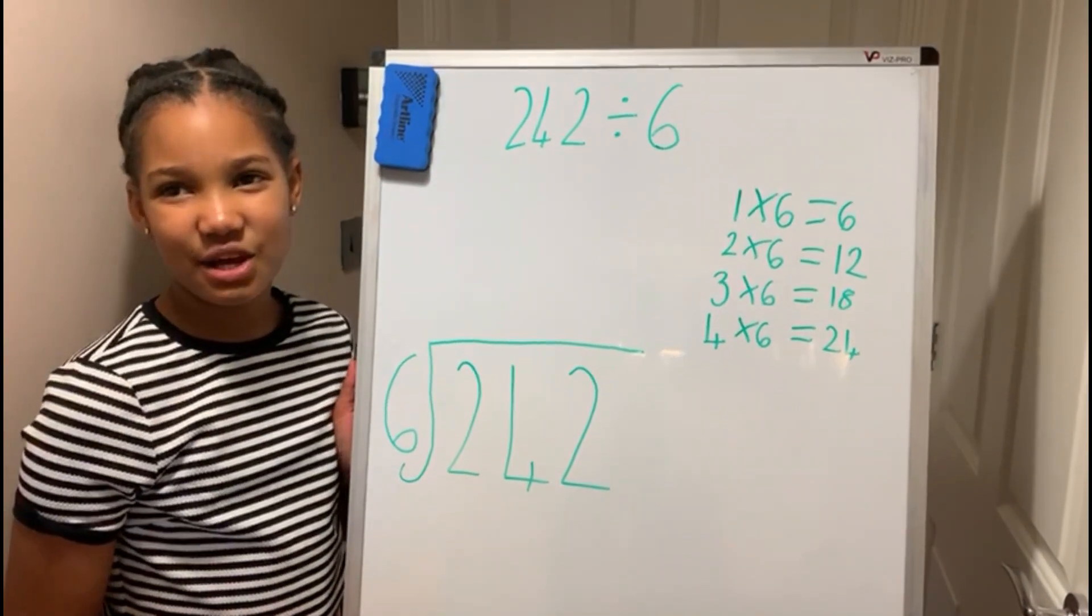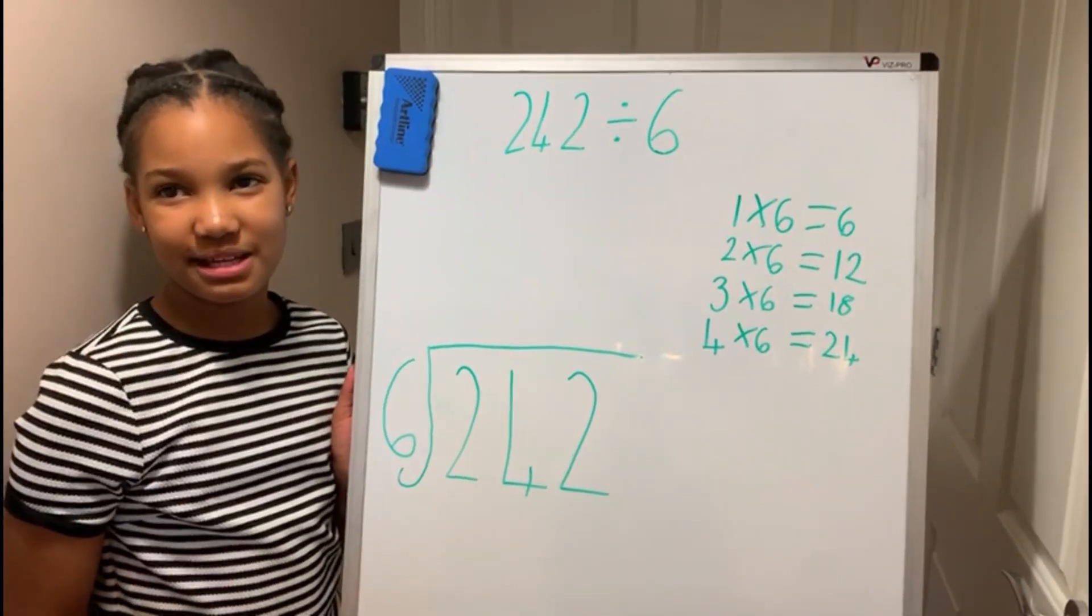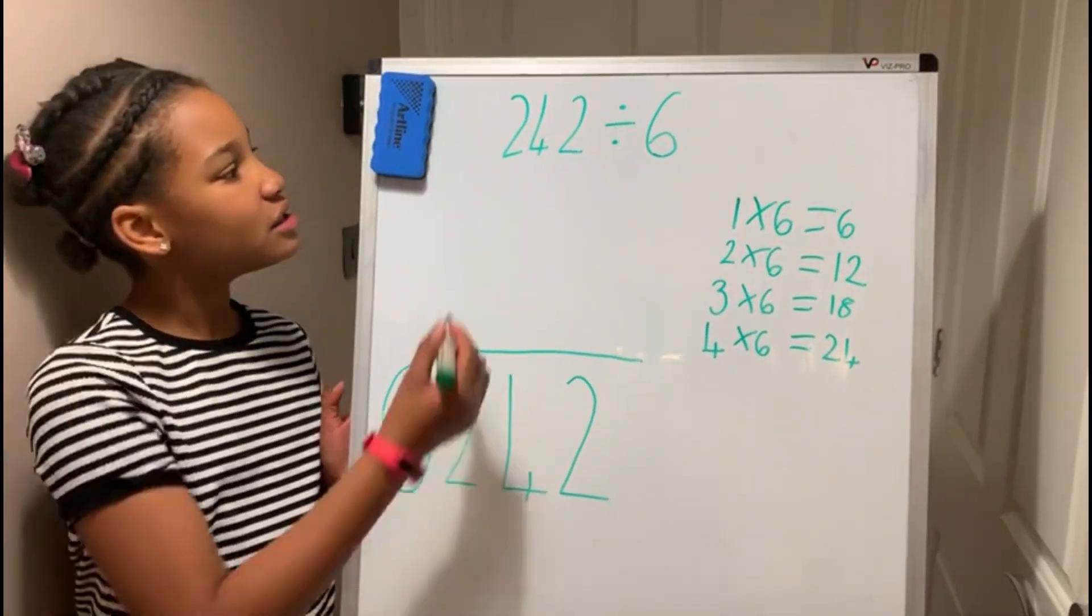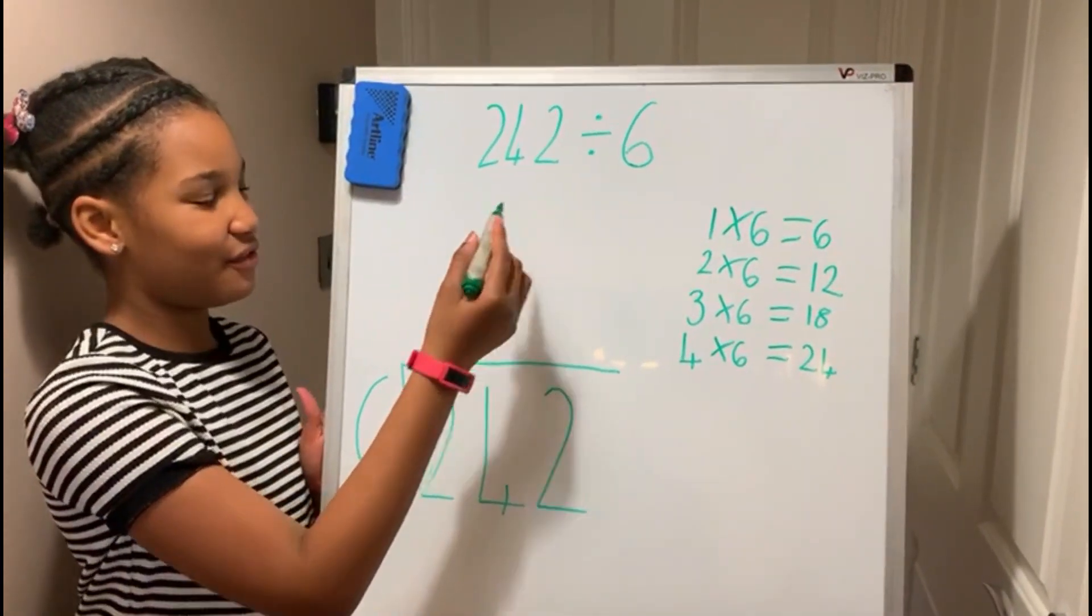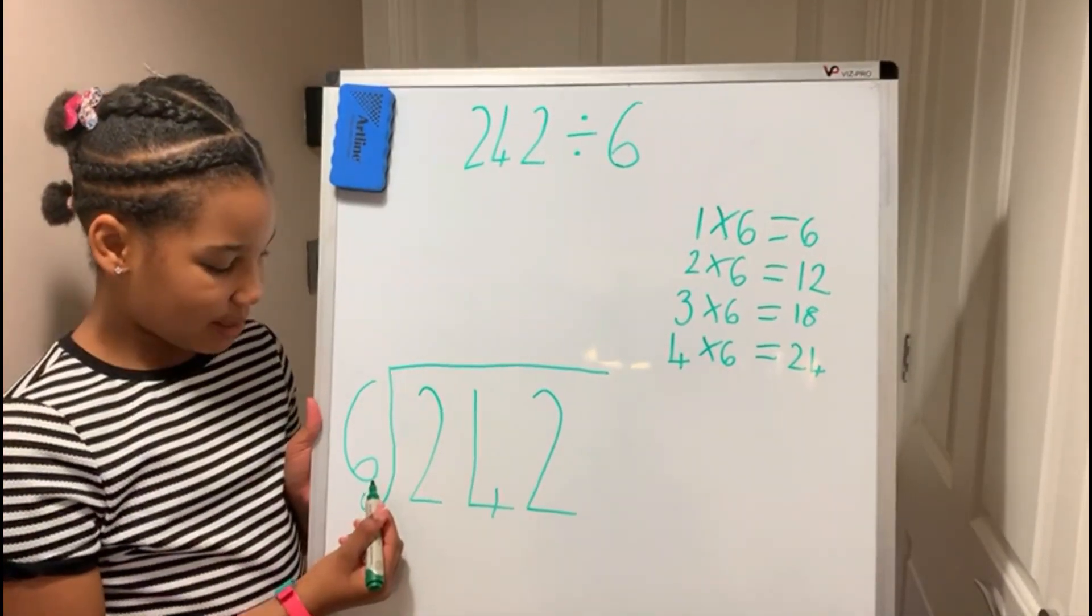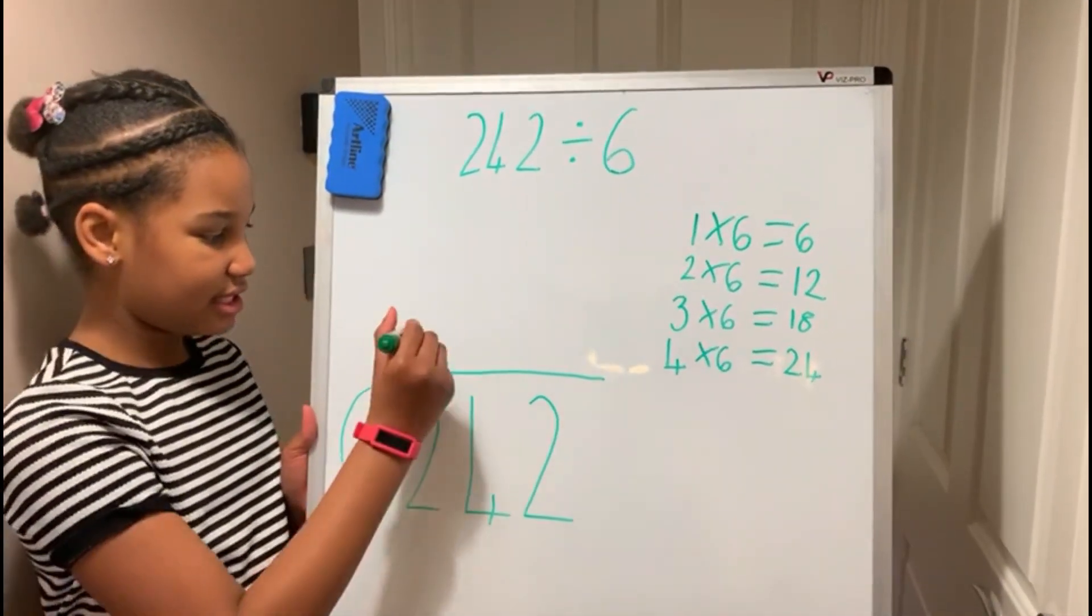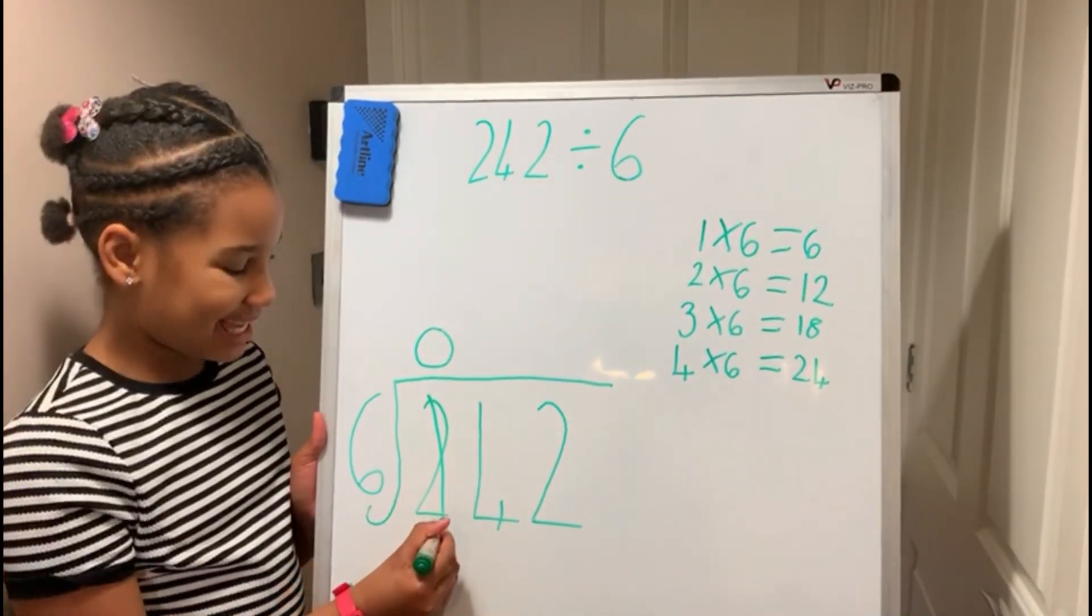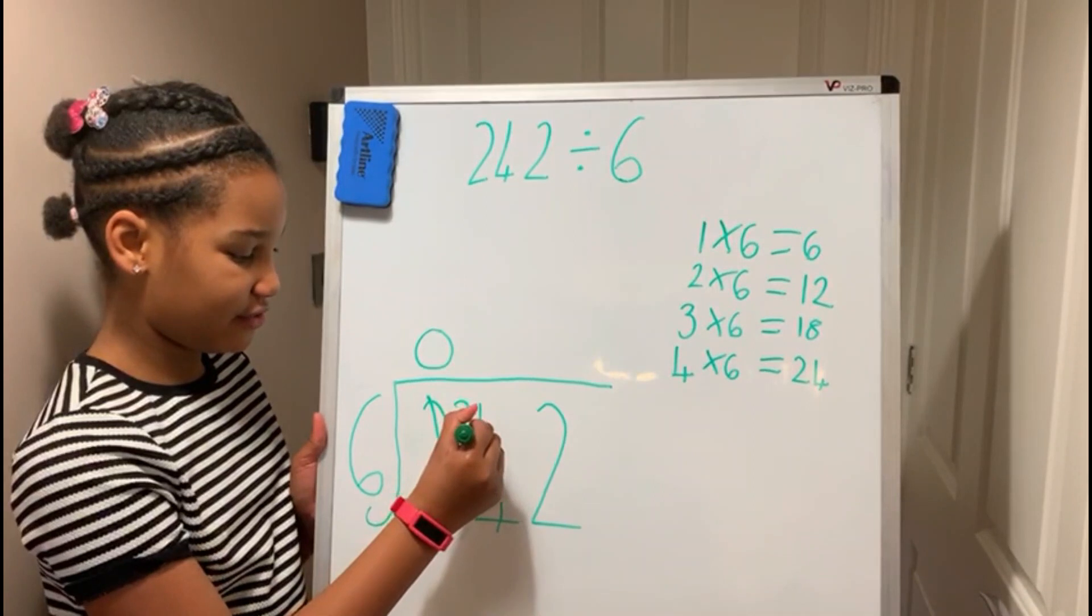Here is an example of division with remainders, but this time we'll be using a 3-digit number: 242 divided by 6. So now, how many 6's go into 2? 0. And you cross out the 2 and carry over the 2 next to the 4.